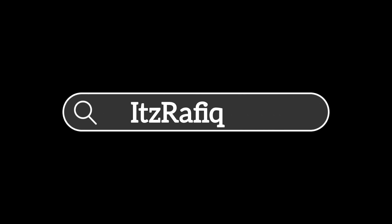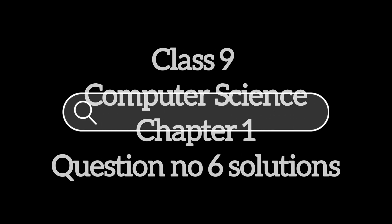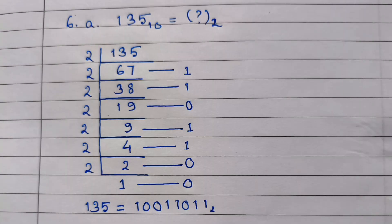Welcome to its Rafiq. In today's video we are going to solve question number 6 of chapter 1, class 9 computer science. Here we have to convert a decimal number, which is 135, into binary. To do so we divide the number by 2, write the remainder on the right hand side, and continue dividing until we get 1. Then we write the answers from bottom to top — the answer will be 10011011.